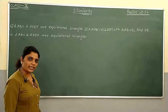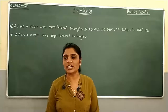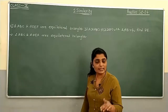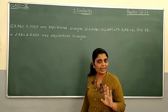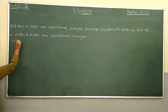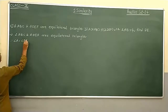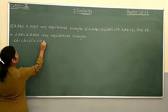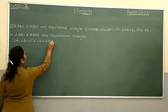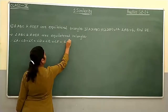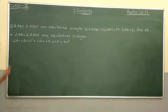So first we must prove that these triangles are similar. It is given that triangle ABC and triangle DEF are equilateral triangles. We know that all angles of an equilateral triangle are 60 degrees. So angle A = angle B = angle C = angle D = angle E = angle F = 60 degrees.